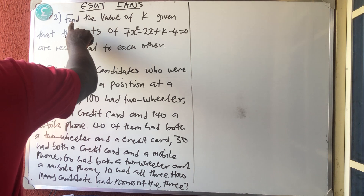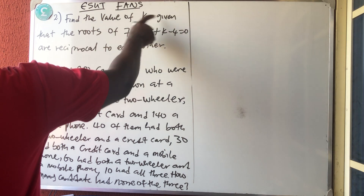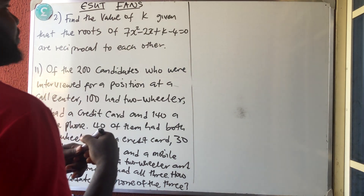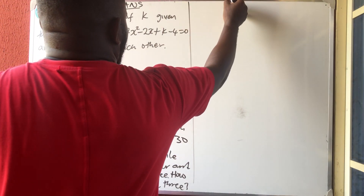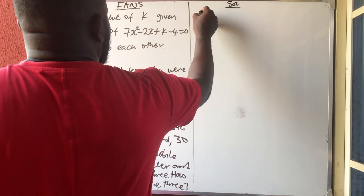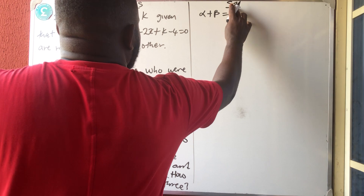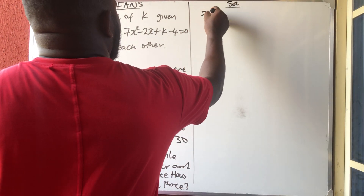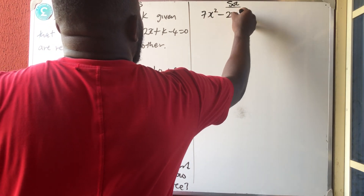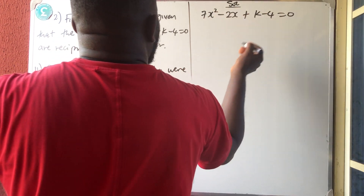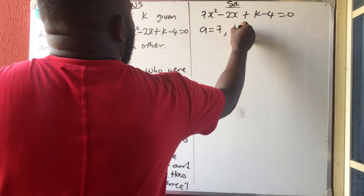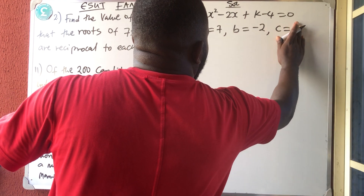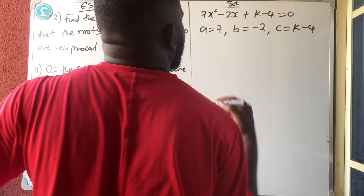So look at the real question. They said: find the value of K given that the roots of this equation are reciprocal to each other. Now the equation is 7x squared minus 2x plus K minus 4 equals 0, which means A is equal to 7, B is equal to minus 2, and C is equal to K minus 4.